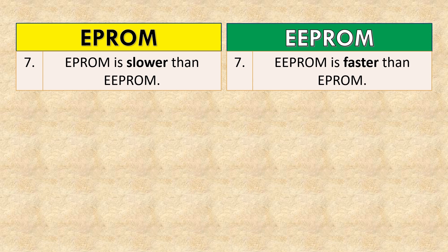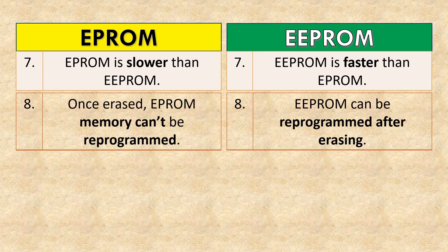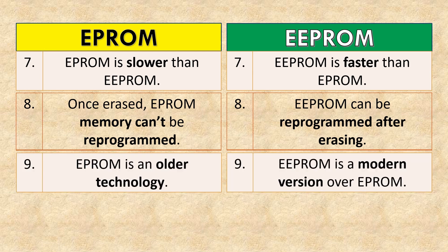EEPROM is faster than EPROM. Once erased, EPROM memory can't be reprogrammed, whereas EEPROM can be reprogrammed after erasing. EPROM is an older technology, while EEPROM is a modern version over EPROM.